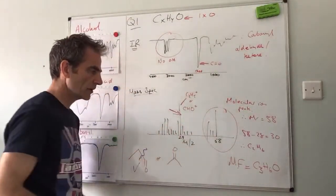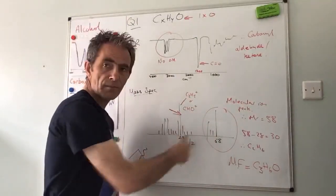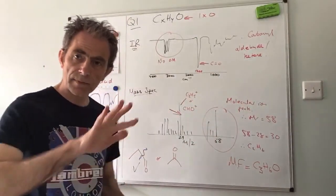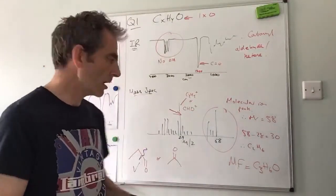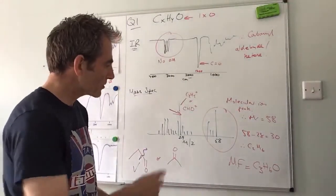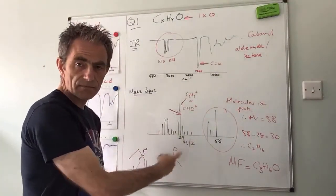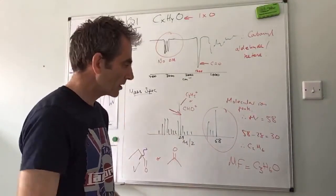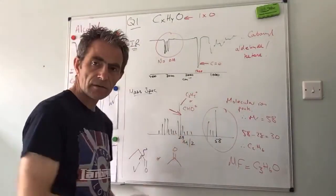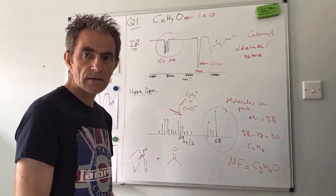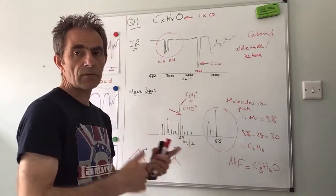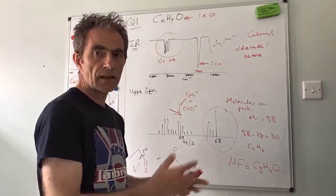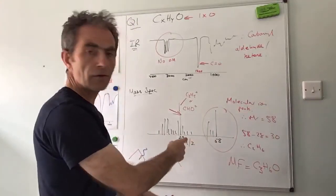So the fragmentation pattern is like a fingerprint, so it's unique to that molecule. So if you've got a database of spectra where you know what the compound is, if you just feed in the spectrum from your mystery compound, the computer would find the match. It would find the one that looks the same as the one you've got.